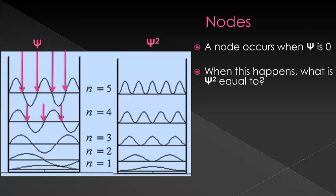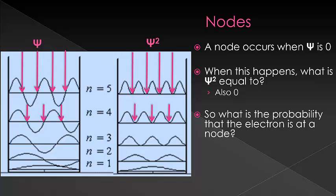Since probability density is psi squared, it must also be zero. If psi squared is zero, what does that mean about the probability of an electron being found there? Since psi squared, or the area under this curve of psi squared, gives us the probability of finding an electron there, we can say that the probability of finding an electron at a node is equal to zero.